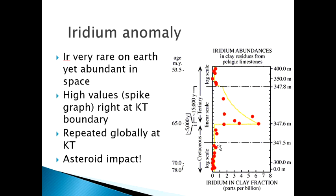What the spike means is that it's business as usual — not much iridium — and then boom, something dumped a lot of iridium onto planet Earth. They reasoned this probably came from space: an asteroid hit planet Earth, delivering this iridium everywhere. Then after it settled down, things returned to normal.